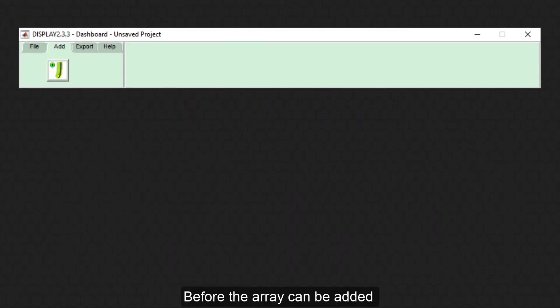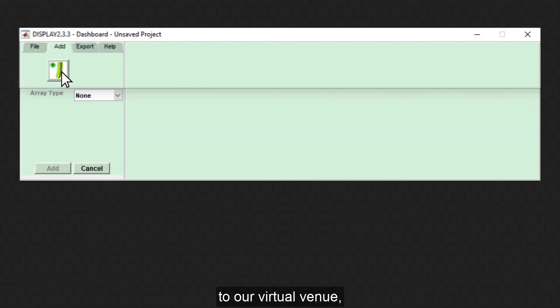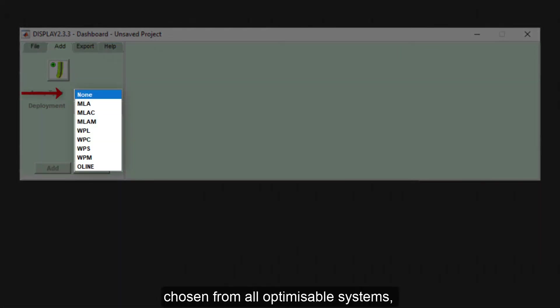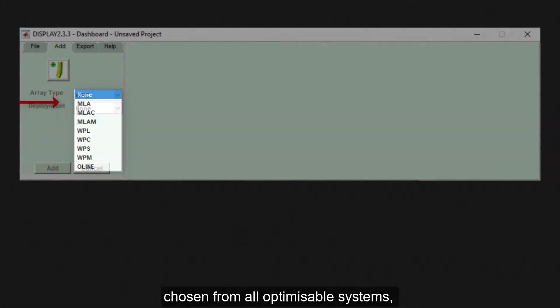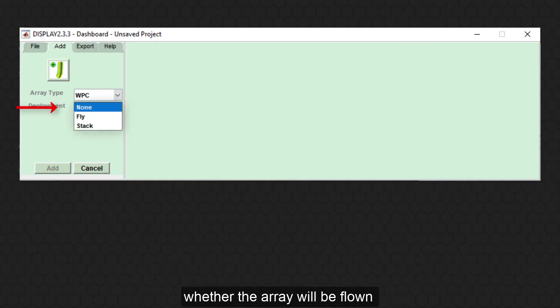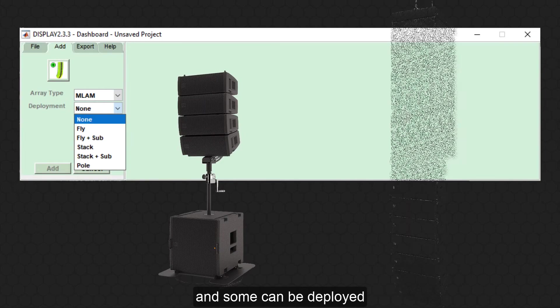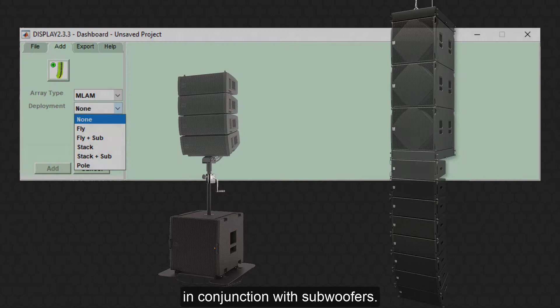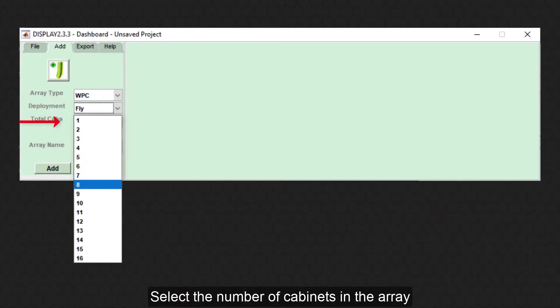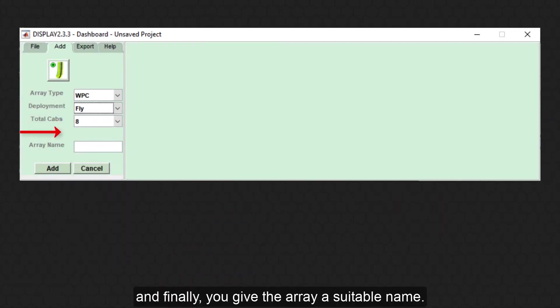Before the array can be added to our virtual venue, display asks the user to define some parameters of the array, such as the array type chosen from all optimizable systems, deployment method whether the array will be flown or ground stacked. Some arrays have the option to pole mount and some can be deployed in conjunction with subwoofers. Select the number of cabinets in the array and finally you give the array a suitable name.